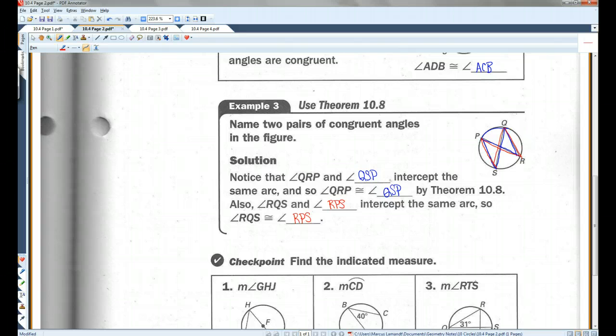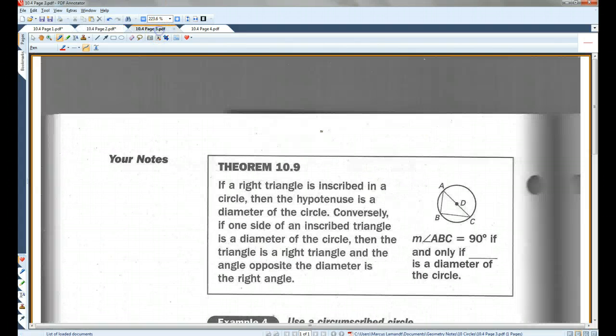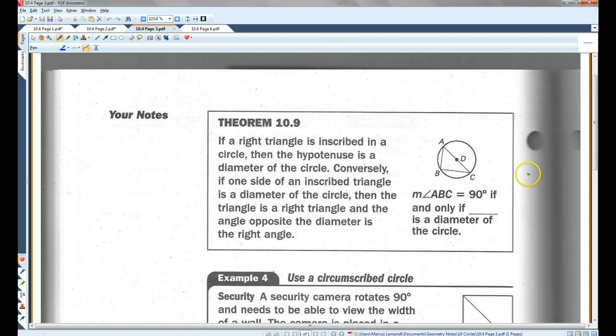You guys can do the checkpoint. Let's go on to page three. Theorem 10.9. If a right angle is inscribed in a circle, then the hypotenuse is a diameter of the circle. So anytime you have a right triangle, the hypotenuse will be a diameter automatically. Conversely, if one side of an inscribed triangle is a diameter of the circle, then the triangle is a right triangle, and the angle opposite the diameter is a right angle. So, if you have a diameter, and that diameter is one side of the triangle, it's automatically a right triangle. So, the measure of angle ABC is 90 degrees if and only if AC is the diameter of the circle.